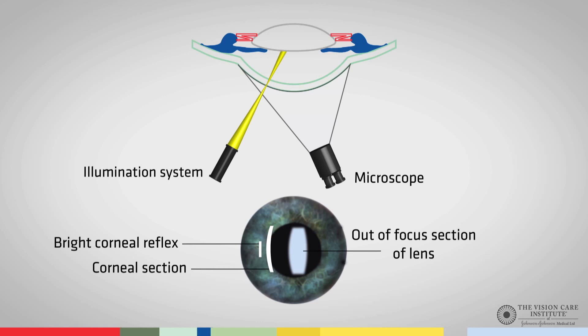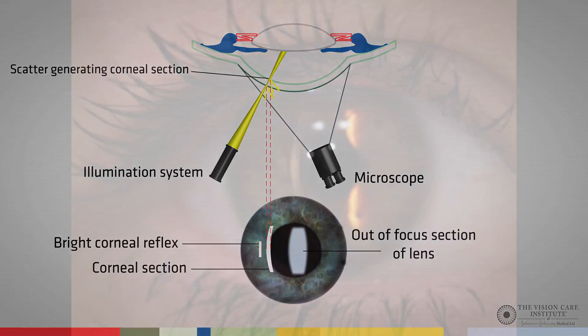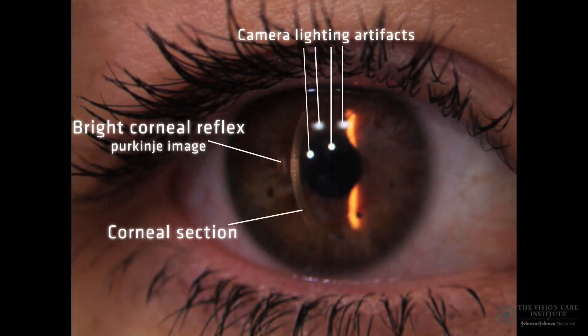Once the section is on the corneal reflection, we will be able to see a reflection of the endothelium as well as from the epithelium. So here, on the real eye, we can see that we have a corneal section, and on the same side as the illumination system, we can see the reflection of the light source. This reflection is also known as the Purkinje image. As in the diagram, what we will do is move the corneal section onto that Purkinje image.